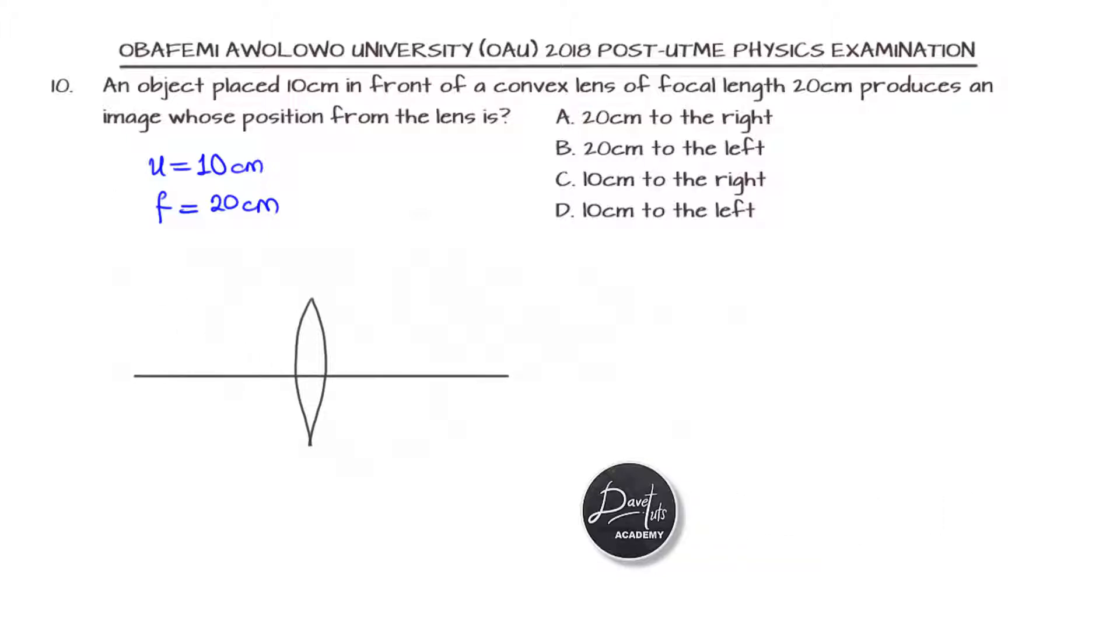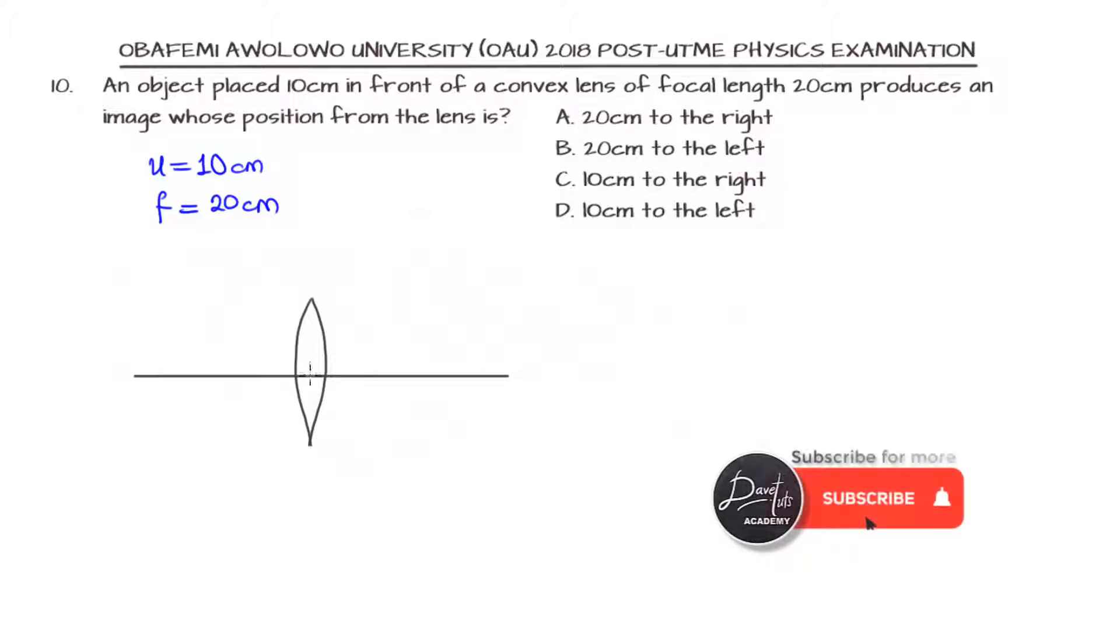Since I understand the properties of how to get my image from my object placed in front of a lens, I have the center of curvature and principal axis. This is the straight line drawn through the middle of the lens, and I'm reciprocating the principal axis on the other side of the lens.